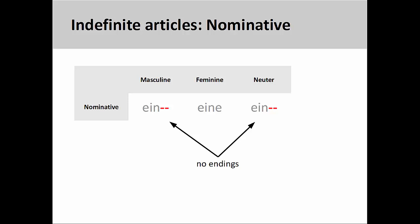is used when we are talking about a thing in general, not a specific thing. For example, a tree instead of the tree. The nominative indefinite articles are ein (masculine), eine (feminine), and ein (neuter).